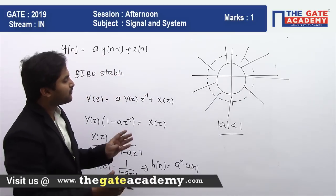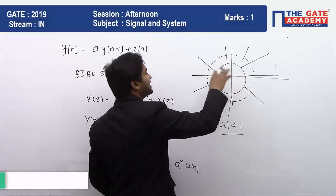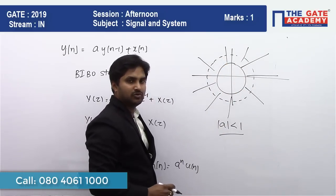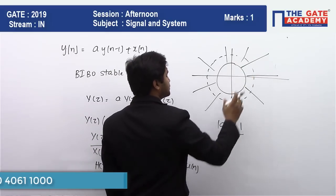Therefore, I can say the magnitude of a is going to be less than 1, because only if the value of a is less than 1, its radius will be less than 1 and it will enclose the unit circle.